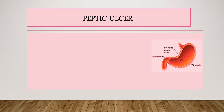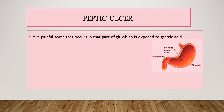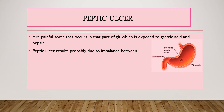So what are peptic ulcers? Peptic ulcers are painful wounds or sores that occur in that part of the GIT which is exposed to gastric acid and pepsin. This gastric acid and pepsin are produced by the stomach in order to digest food. Peptic ulcer is a result of imbalance between aggressive factors and defensive factors.